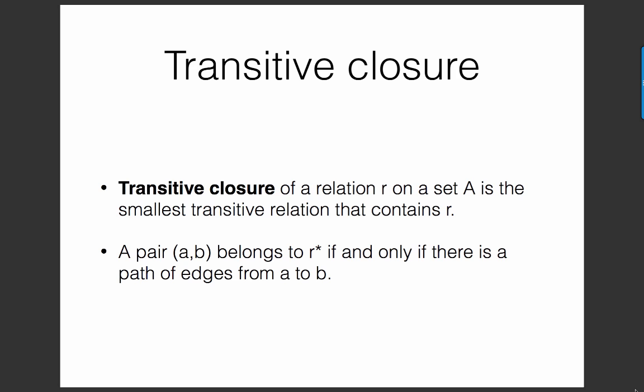We start with a relation r that may not be transitive and then add edges onto it until it is transitive. And we know which edges to add because of a theorem that says that a pair AB belongs to r star, which is our notation for the transitive closure, if and only if there is a path of edges from A to B.